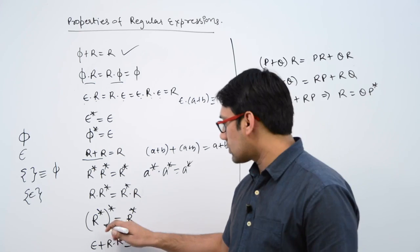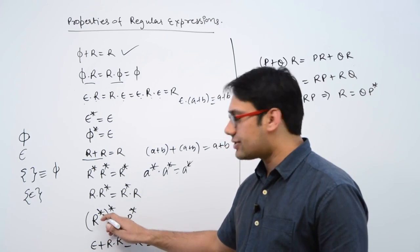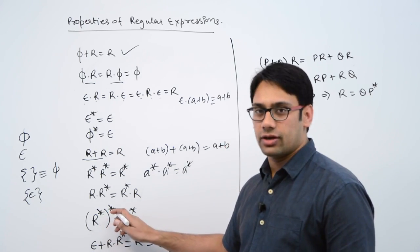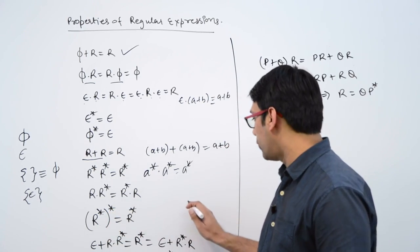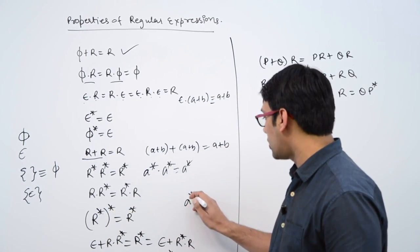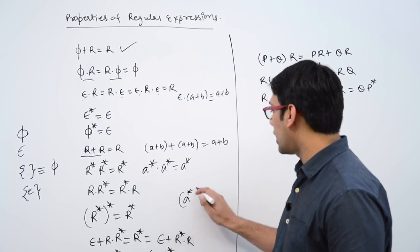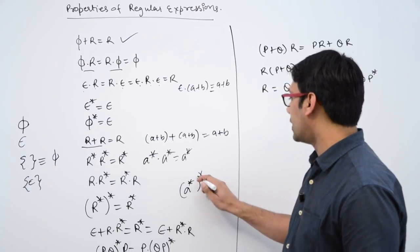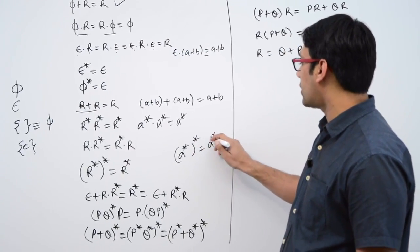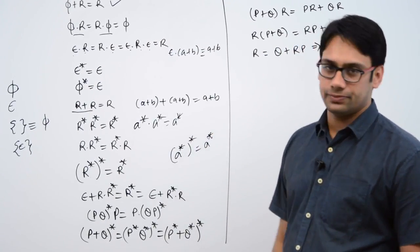If you do r** — that means if you take a*, and then take the star of that again — then it is equal to a* only.